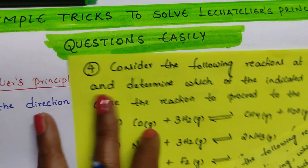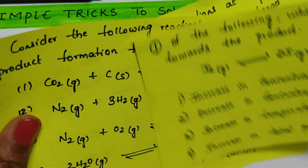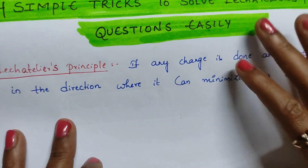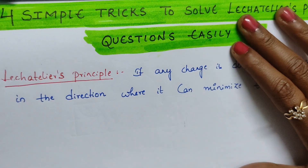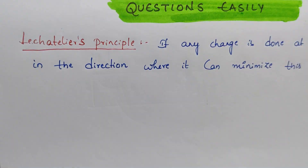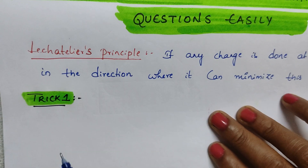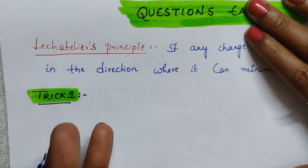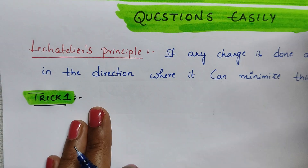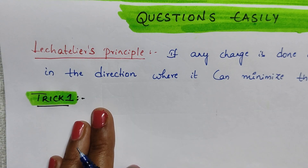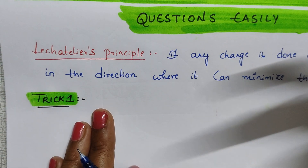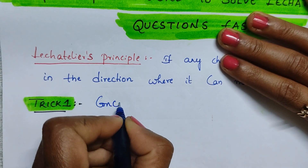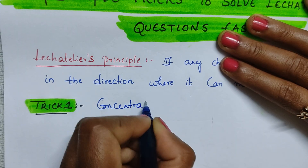By the end of this video you are going to solve these questions on your own. Just by looking at them you will get the capability to solve the questions. Watch up to the end of the session. Let us see Trick Number One: the effect of concentration — meaning, if we change anything related to concentration, how does equilibrium shift?